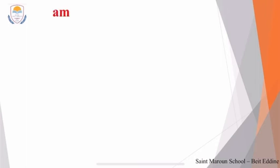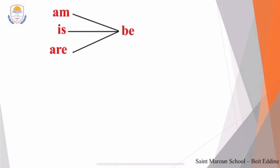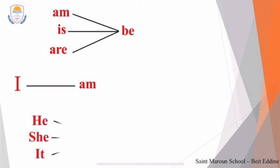We said that 'be' forms are: am, are, be. 'Am' is used with 'I' — I am. And 'is' is used with he, she, it.